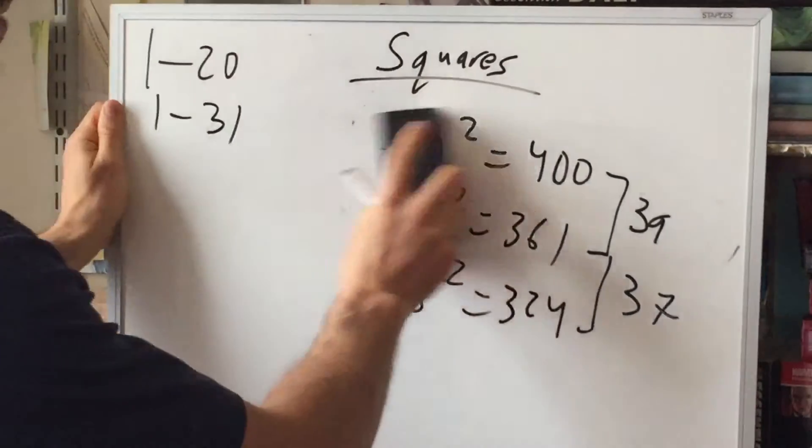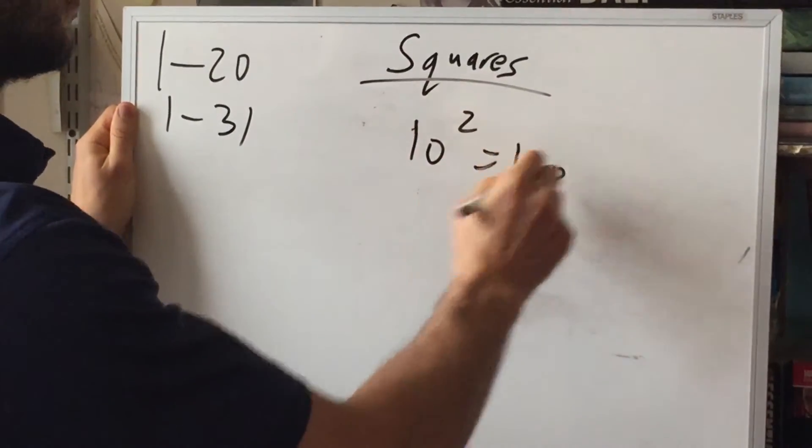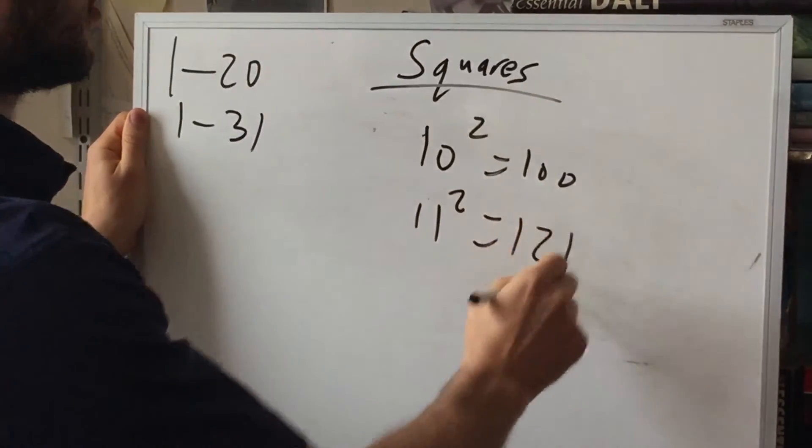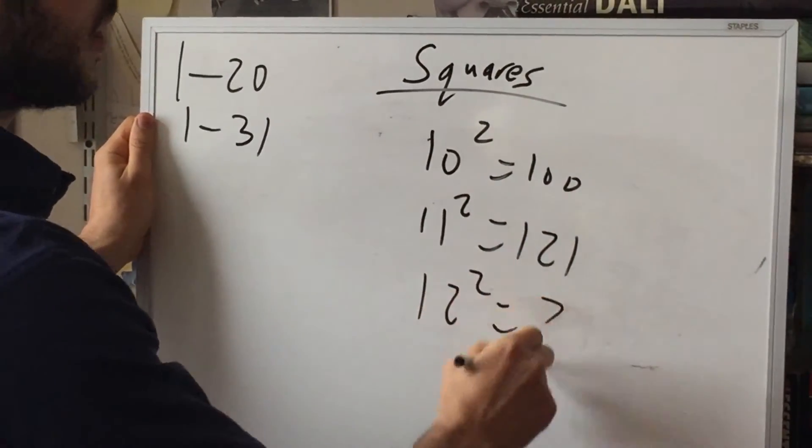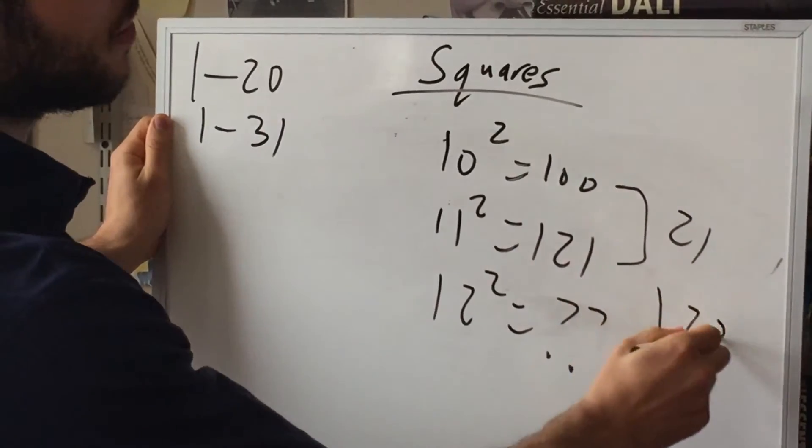So, let's look at another one. Let's say you know 10 squared, you know 11 squared, and you don't know 12 squared yet. So, you say this is 21, so add 23 to get the next one.